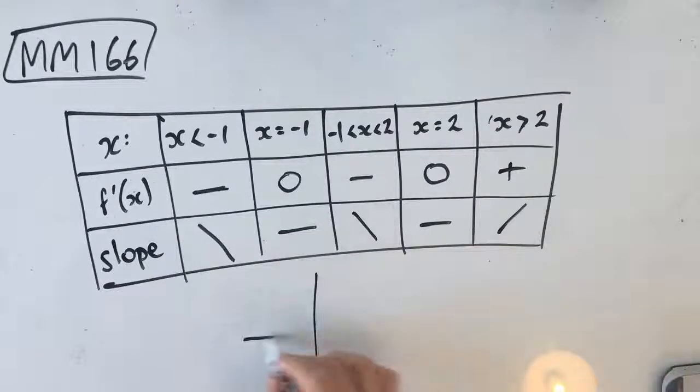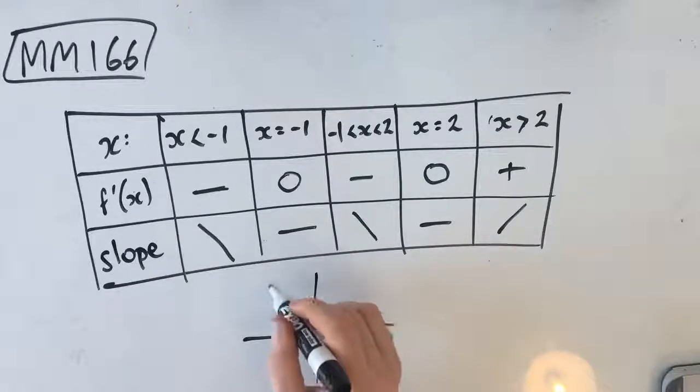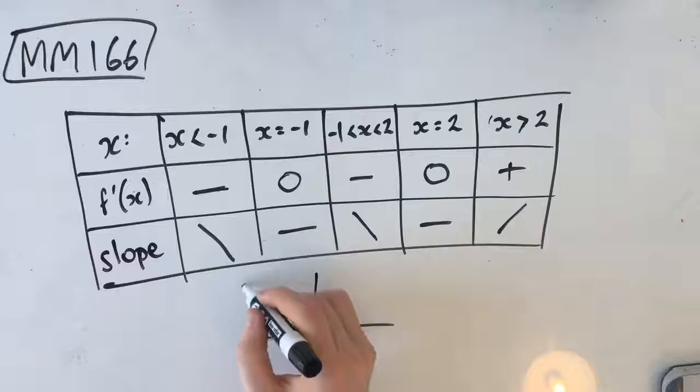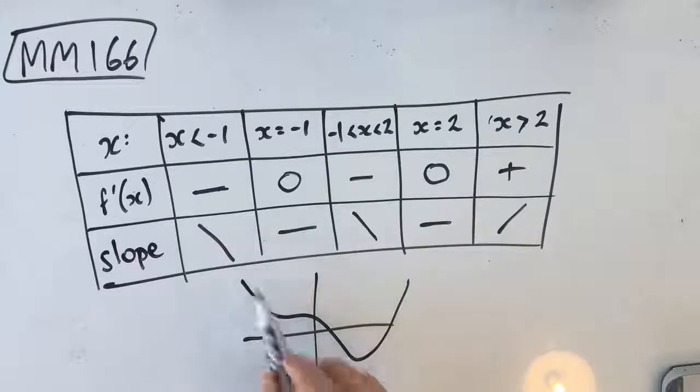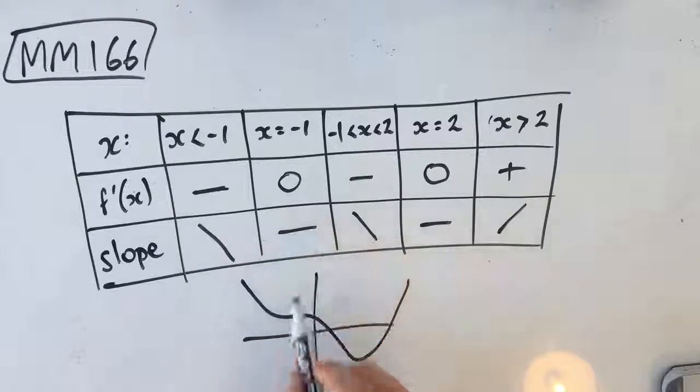So we end up with a graph. It doesn't matter really where it is, but we know that it goes something like this, right? Because it goes down, down, down until negative 1.